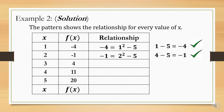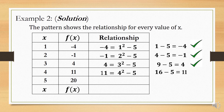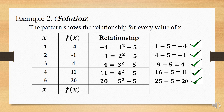Proceeding to the third and fourth ordered pairs: 11 is equal to 4 squared minus 5. Since 4 squared is 16, and 16 minus 5 is 11 — still correct. For the final ordered pair, 20 is equal to 5 squared minus 5. Since 5 squared is 25, and 25 minus 5 is 20 — also correct. Therefore, the relationship between x and f of x is: f of x is equal to x squared minus 5.